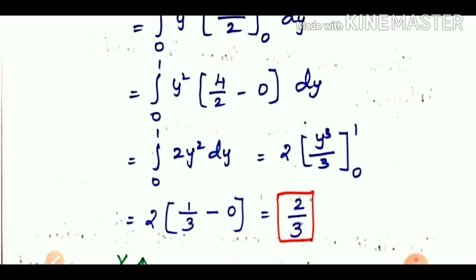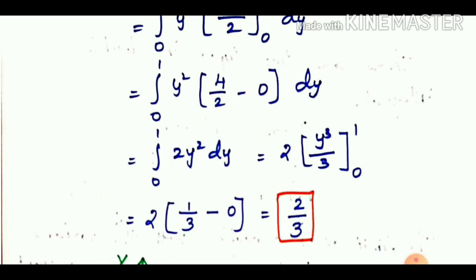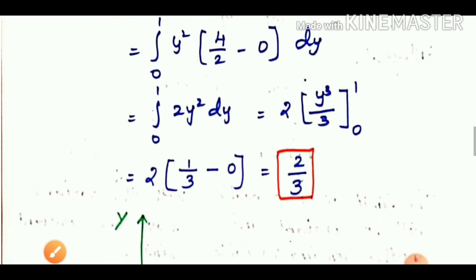After simplification, we get 2y² dy. Since 2 is constant, we integrate y² to get y cubed divided by 3. Applying the limit 0 to 1: the upper limit gives 1 by 3, and the lower limit gives 0. So we have 1 by 3 minus 0. Multiplying 2 by 1/3, we get 2 by 3. That is the answer for the independent type.